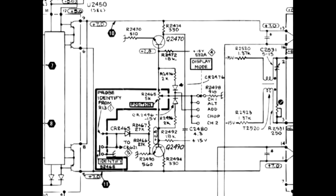In this case setting the mode to add and using the channel 1 position control was necessary because the channel 2 position control was now disabled.